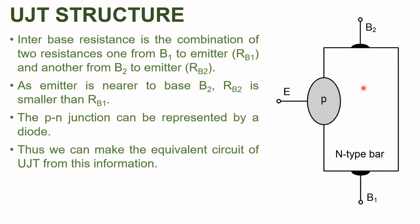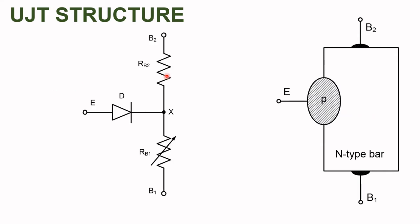The p-n junction formed between the p-type region and the n-type base can be represented as a diode. Thus, we can form the equivalent circuit of the UJT as shown in the figure. Here, RB2 is the resistance between terminal base 2 (B2) and the emitter terminal, and RB1 is the resistance between terminal base 1 (B1) and the emitter. The p-n junction between the p-layer and the n-type base is represented by diode D. Diode D is connected to these resistances at point X.